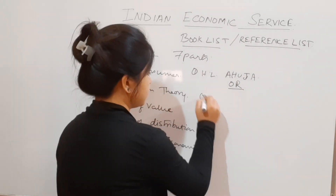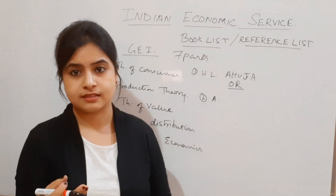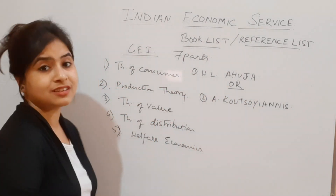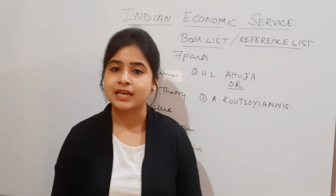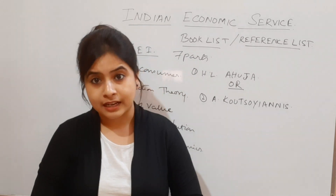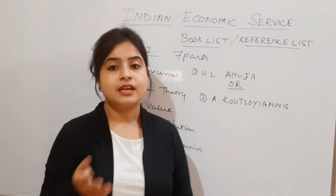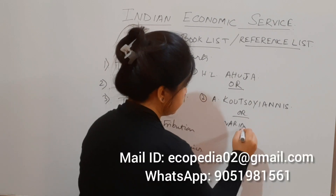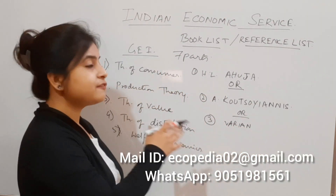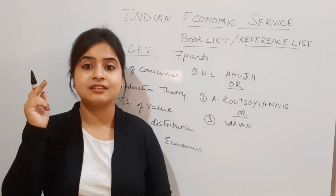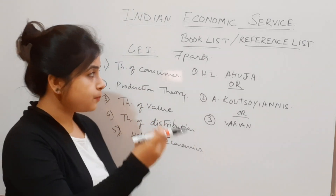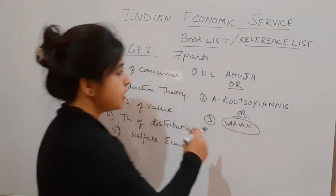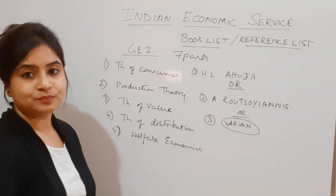Koutsoyiannis is a wonderful book for advanced theory. There is also Varian, which again covers advanced theories and will help you as well. These are for the theoretical portions. One important note: do not follow all the books simultaneously as that will create confusion. Be specific about your focus — use Varian as a complementary resource alongside either of the other two, not as a substitute.